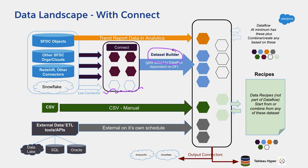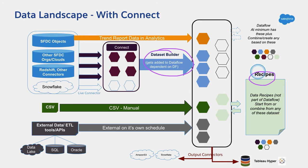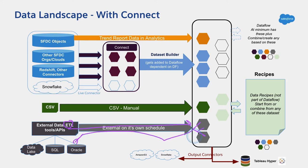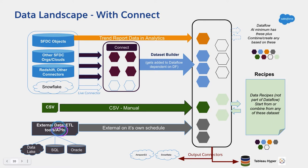After that, we'll use either Dataset Builder or recipes directly to combine objects — for example, opportunity, account, and user — to produce a final opportunity dataset with all relevant information. We'll also cover CSV upload, which is a simple manual upload of a CSV file into a dataset. You can also leverage your own ETL tools, as long as they have a connector to Tableau CRM, or use the API — there's an API guide under the help link showing you how to push data directly into Tableau CRM.